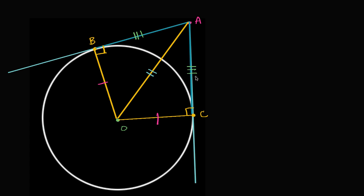And there you go. We hopefully feel good about the fact that AB is going to be congruent to AC. Or another way to think about it, if I take a point outside of a circle and I construct segments that are tangent to the circle, those two segments are going to be congruent to each other.